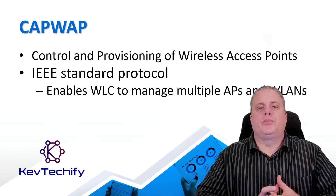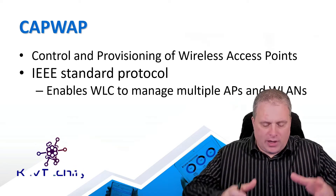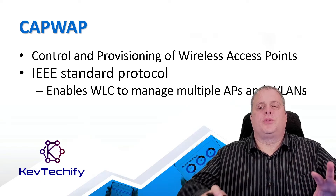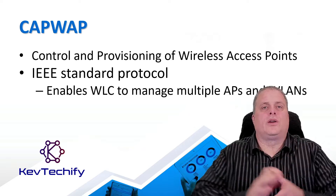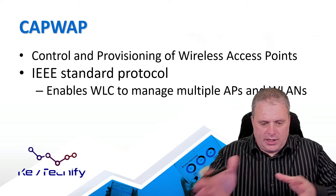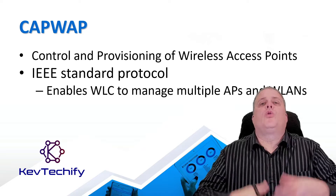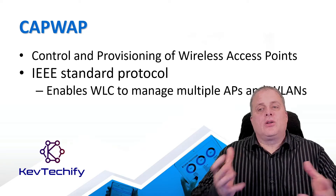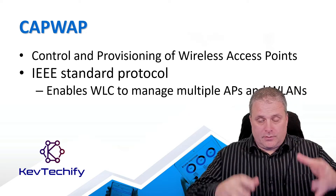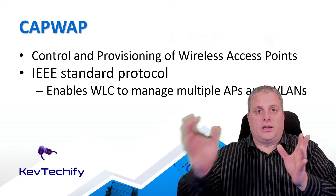CAPWAP stands for Control and Provisioning of Wireless Access Points. This is an IEEE standard that allows you to have a wireless LAN controller — one central point of administration — that can control multiple access points and different wireless LANs. That one wireless controller communicates with each access point, does the configuration, and you can do one access point at a time or a whole bunch of them. It also controls the SSIDs, the security on them, and the flow of data between the wired network and the wireless devices.